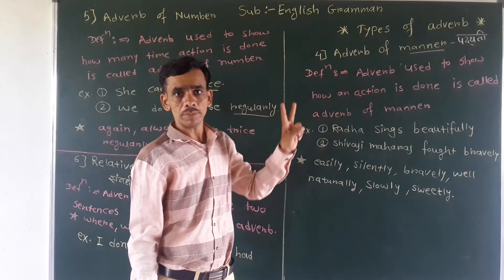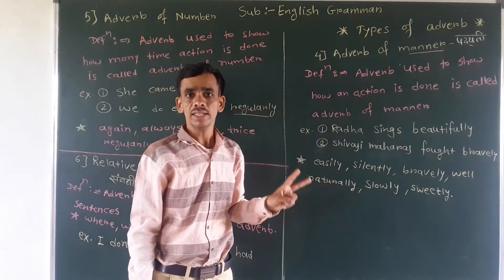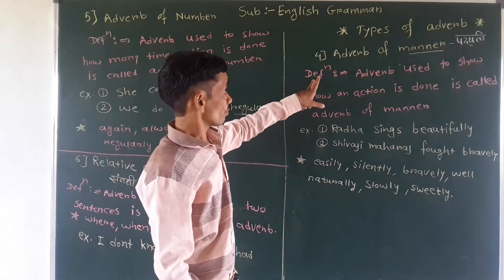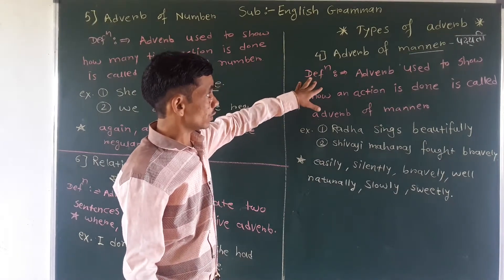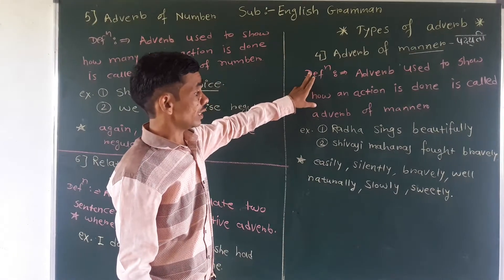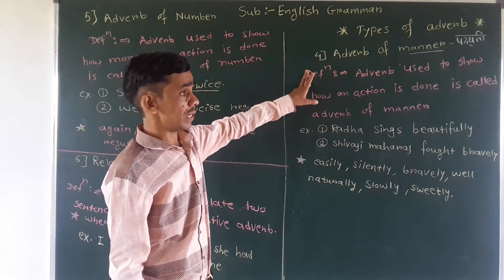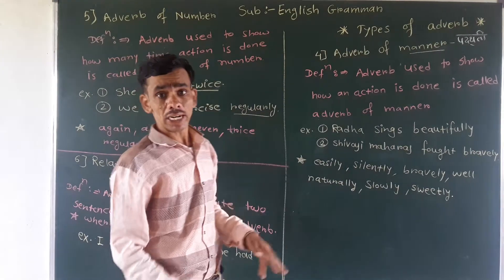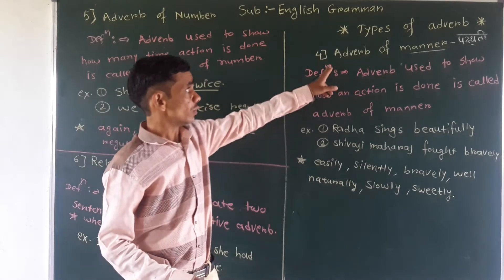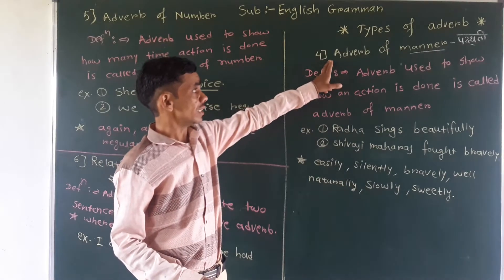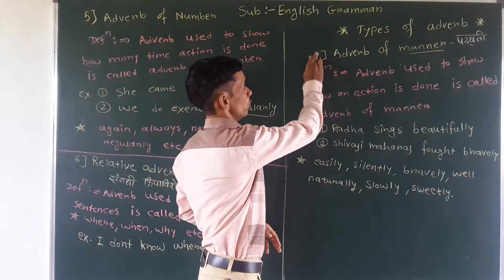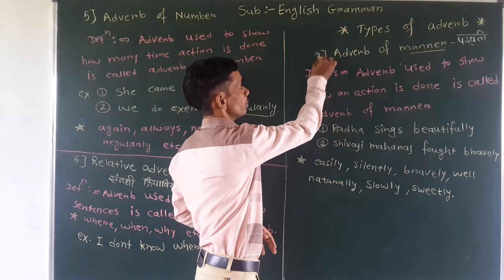And its two types, which are the adverb of manner we have seen today. And we have seen last day adverb of place and adverb of time already. So today we are going to see our third type, adverb of manner.